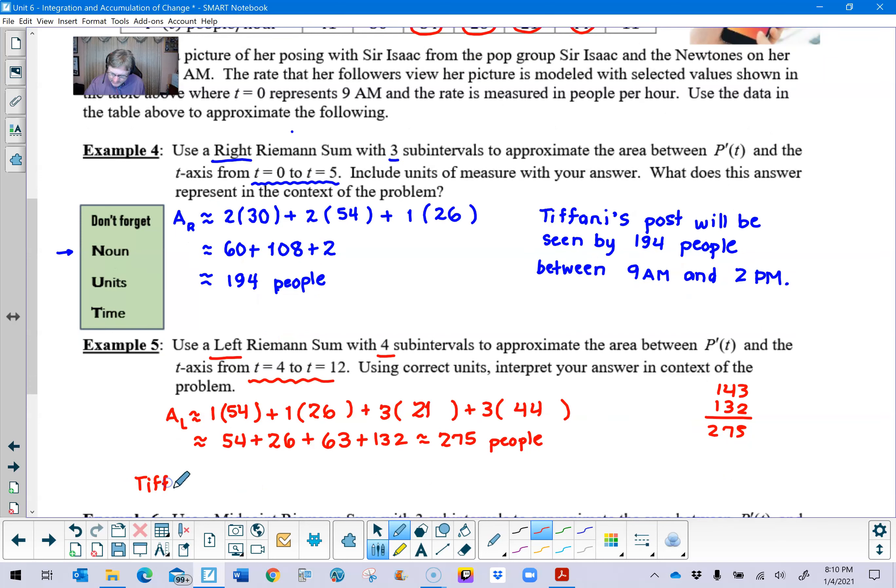And the interpretation is going to be very similar to our interpretation before. It's still Tiffany's post. She's excited about this picture with Sir Isaac. So we'll say that Tiffany's post is seen or will be seen. However you want to phrase it from a tense perspective is completely up to you. And we'll put our answer 275 people. Let's just get our time interval correct here now. And when we start at time t equal 4, we're talking about 4 hours past 9 a.m., which is going to be 1 p.m. And then when you add 8 hours to that time of 4, that's going to take us to 9 p.m.